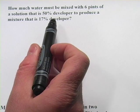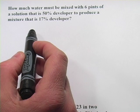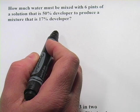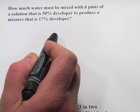The first one says, how much water must be mixed with six pints of a solution that is 50% developer to produce a mixture that is 17% developer?